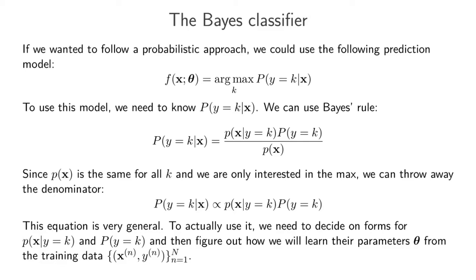This equation is still very general. We've written down some nice expressions with probabilities in them, but to actually use it, we need to decide on forms for this density and for the prior probability, and then figure out how we will learn the parameters from the training data. The parameters are denoted theta, grouping all model parameters together — like the w vector we had in linear regression.